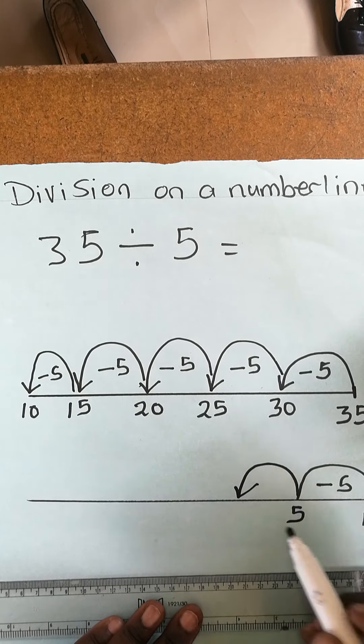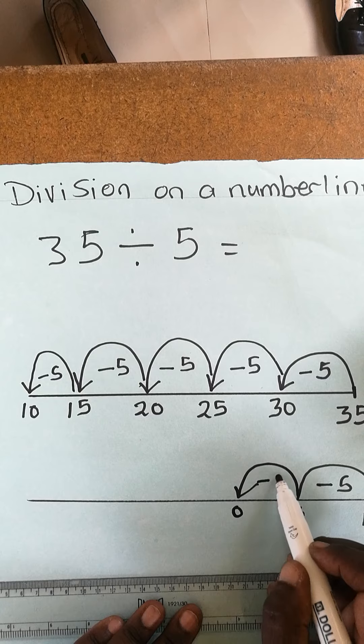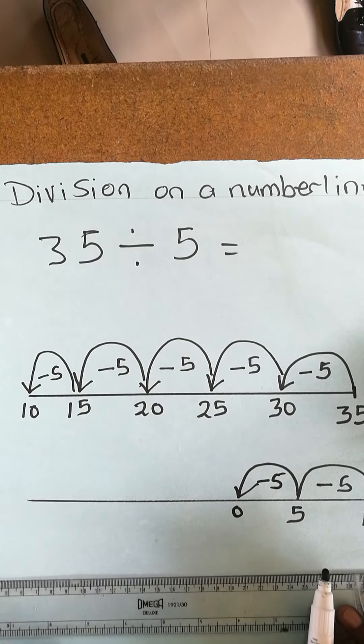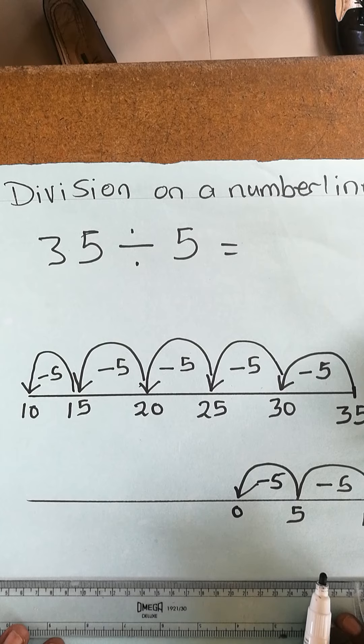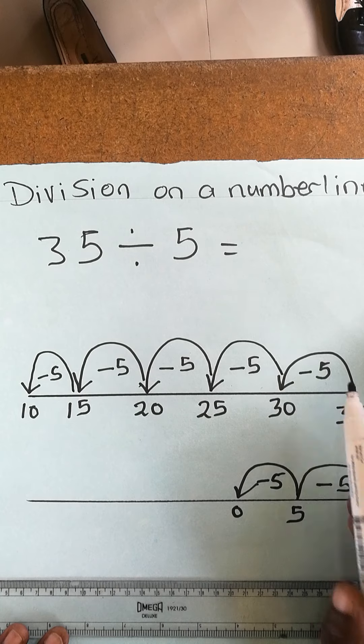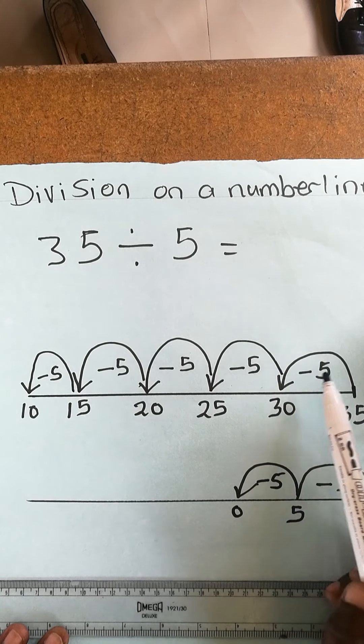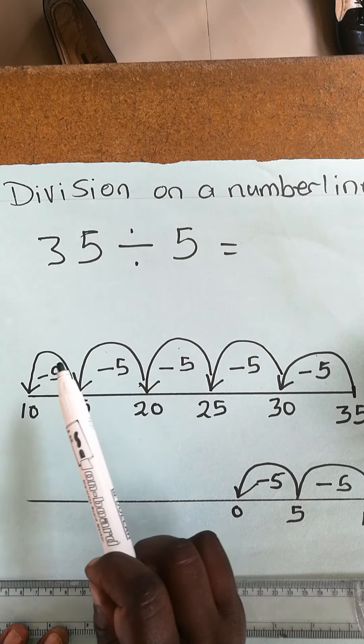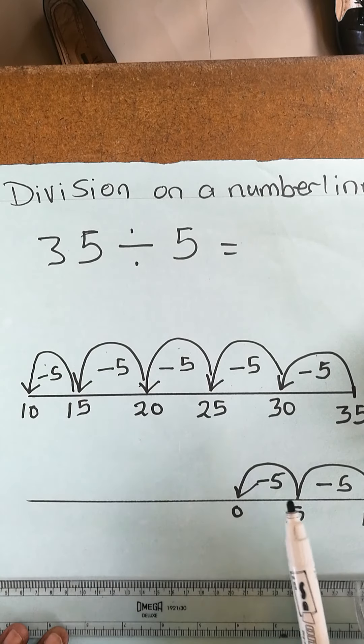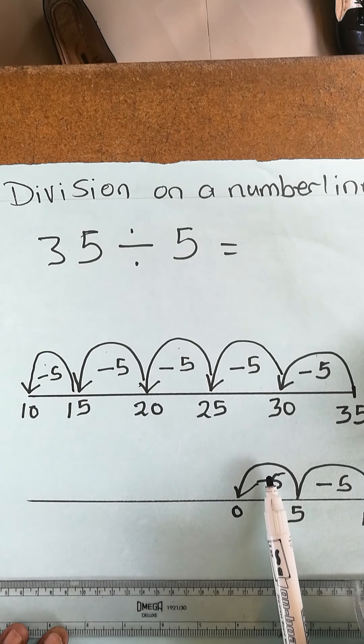Zero. Now you need to find the answer. How do you find the answer? You count how many jumps you have made from 35. Let's count the mountains together: 1, 2, 3, 4, 5, 6, 7. So your answer...